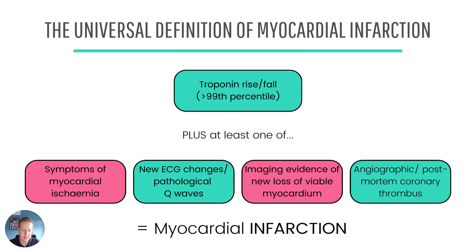We have to differentiate those from a myocardial infarction. To diagnose an MI, we need one more thing, because none of those injury causes alone constitute evidence of myocardial ischaemia. The universal definition tells us we need not only that troponin rise or fall and an acute myocardial injury, but also one of four things: symptoms compatible with myocardial ischaemia (they don't need to be typical), ECG changes such as ST depression, T-wave inversion, or new Q waves, new imaging evidence of loss of viable myocardium such as an echo wall motion abnormality, or a thrombus found on angiogram or post-mortem. If we have one of those four things plus the troponin rise or fall, then we have an acute myocardial infarction.